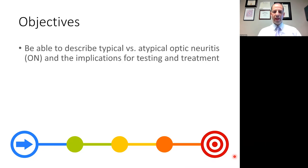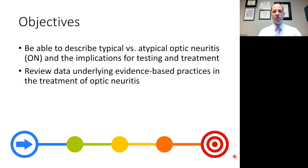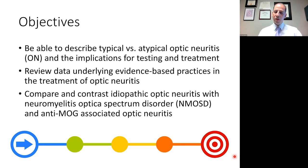Let's talk about our objectives for today. I'm hoping you'll be able to, number one, describe typical versus atypical optic neuritis and the implications that has for testing and treatment. This is a very helpful construct clinically that can help us know what kind of additional testing may be needed for some patients with optic neuritis. We'll also review some of the data that underlies the evidence-based practices in treatment, and compare and contrast idiopathic optic neuritis with other forms such as NMO spectrum disorder and anti-MOG-associated optic neuritis.